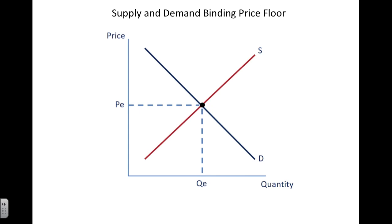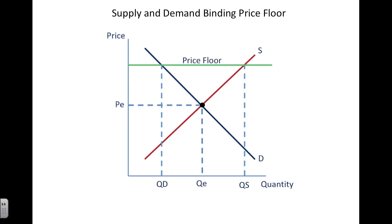Another example of an imbalance is a price floor. A price floor, if it is binding, is found above equilibrium. At the price floor, we have an imbalance as the quantity supplied is now greater than the quantity demanded as a result of an increase in prices artificially by government policy.